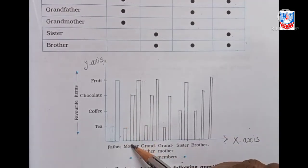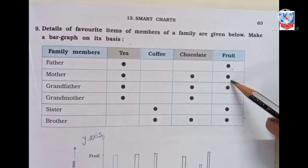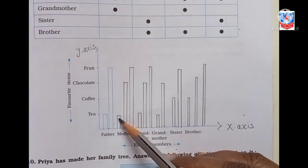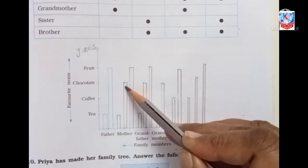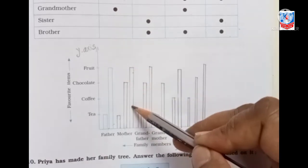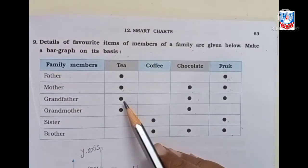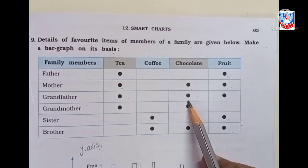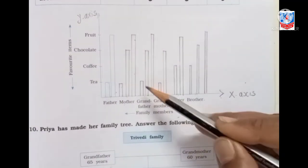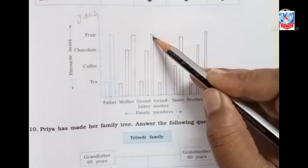Mother likes tea, chocolate and fruit. You can see here: tea, chocolate and fruit are marked for mother. I have already done this for you. Then grandfather likes tea, chocolate and fruit. You can see: tea, then chocolate, then fruit. Okay.